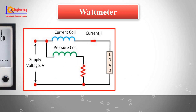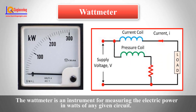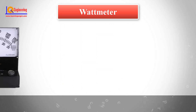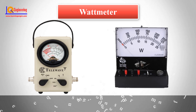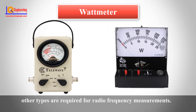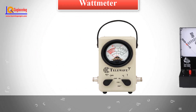Wattmeter: The wattmeter is an instrument for measuring the electric power in watts of any given circuit. Electromagnetic wattmeters are used for measurement of utility frequency and audio frequency power. Other types are required for radio frequency measurements.